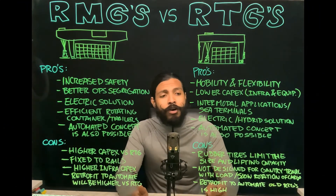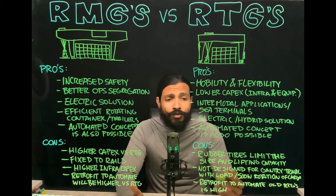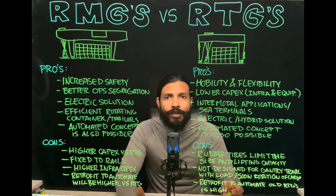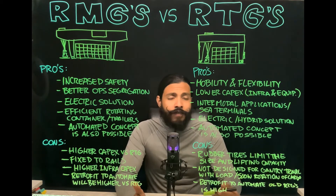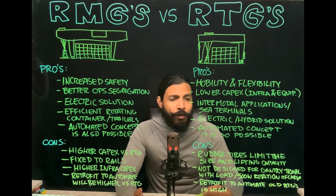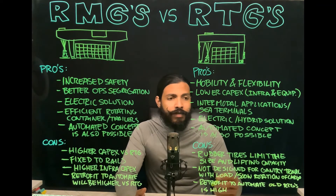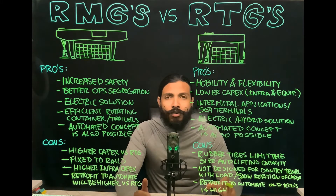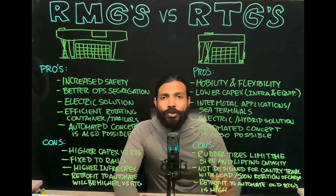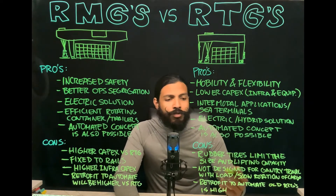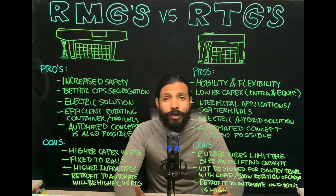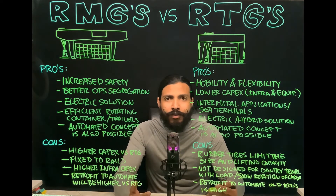Now let's go into the cons of the RTG. As the name suggests, RTGs use rubber tires, and those rubber tires normally limit the size and lifting capacity of containers. For intermodal applications, most RTGs are not designed to gantry travel with load — that's something to keep in mind. When it comes to rotating containers, you can do that at the head block level, but it will likely be slower compared to an RMG that rotates the whole trolley 360 degrees. And when it comes to retrofitting an old RTG for automation, the cost could be quite high — you need to evaluate the cost-benefit of automating versus investing in new equipment.